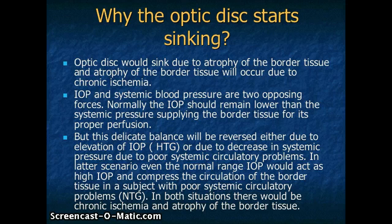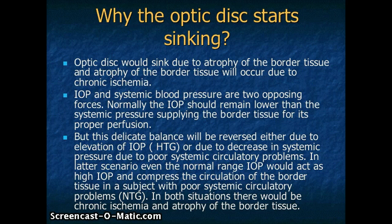Our next question is why the optic disc starts sinking. The optic disc would start sinking due to atrophy of the border tissue, and atrophy of the border tissue will occur due to chronic ischemia. Intraocular pressure and systemic blood pressure are two opposing forces. Normally, the intraocular pressure should remain lower than the systemic pressure of the border tissue for its proper perfusion. But if this delicate balance is reversed and the intraocular pressure takes the upper hand, it will compress the systemic circulation of the border tissue, resulting in chronic ischemia and its atrophy.